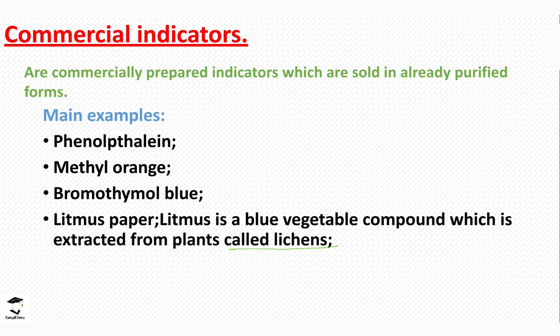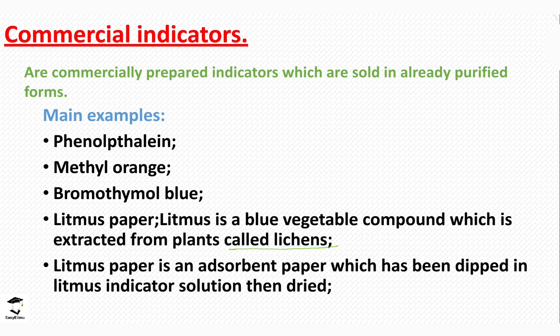Litmus paper is absorbent paper which has been dipped in litmus indicator solution and then dried. When you dip it in a solution, it easily changes color depending on whether it's an acid or a base. We are going to use these commercial indicators to test different substances in the lab.